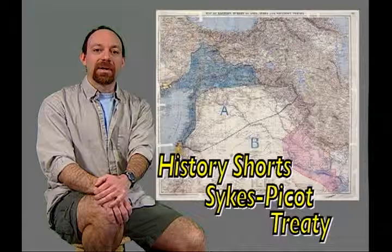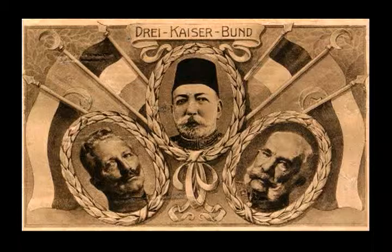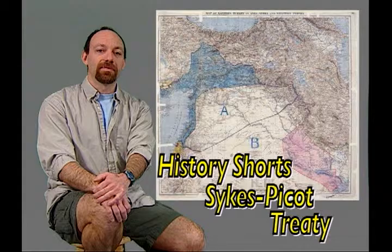When World War I erupted in 1914, the Ottoman Empire allied itself with Germany and Austria against Britain, France, and Russia. Through the first year of the war, the armies of the European powers were locked in a terrible stalemate on the Western Front in France.